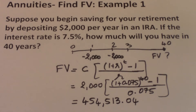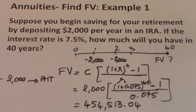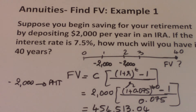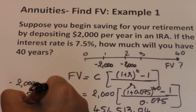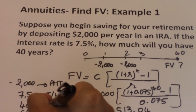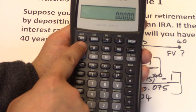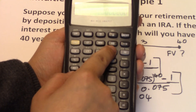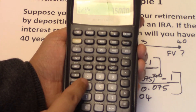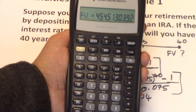We can also get this through the financial calculator by computing for the future value directly. Negative $2,000 will be the PMT. The I/Y is 7.5% — the interest rate per year. N is 40. We clear our work, enter negative 2,000 as the payment, 7.5 as I/Y, and 40 as N, then compute future value. The result is similar to the number we previously found.